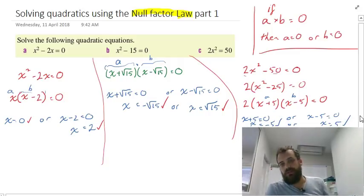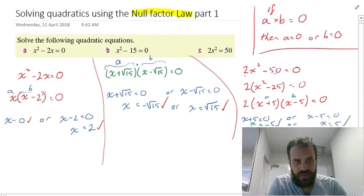That's the null factor law. Generally, you end up with two answers when you're solving questions like this.